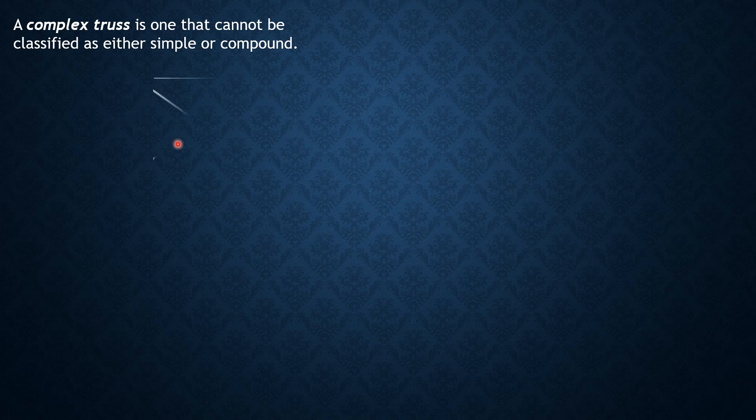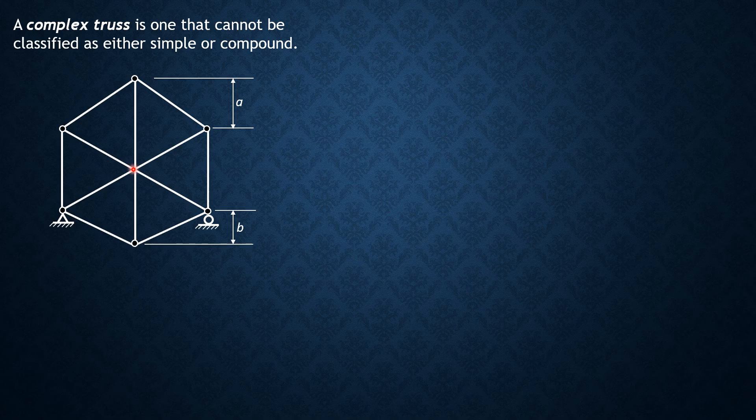A complex truss is one that cannot be classified as either simple or compound, like the one shown. Take note that this is not a joint; the members are just passing side by side.